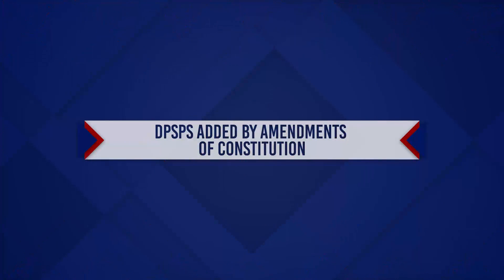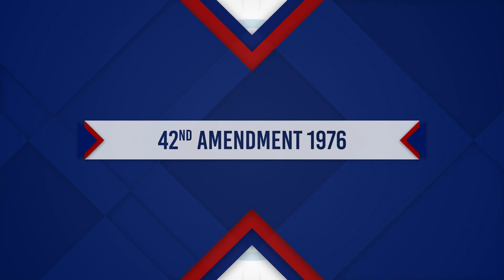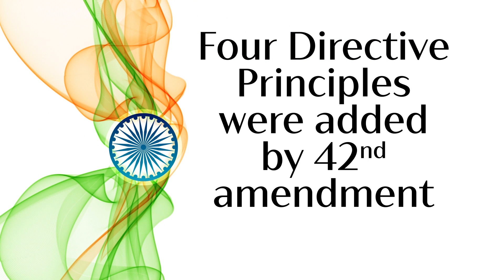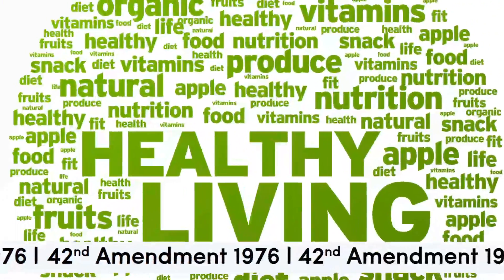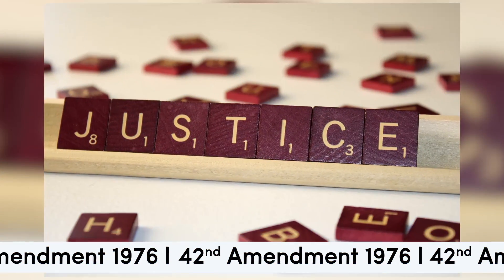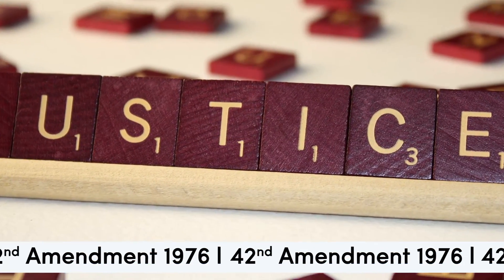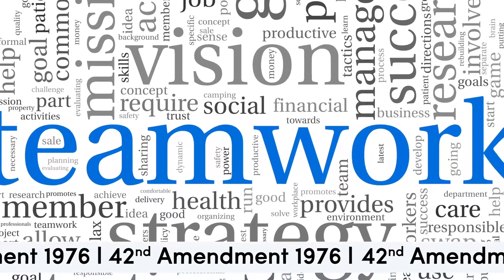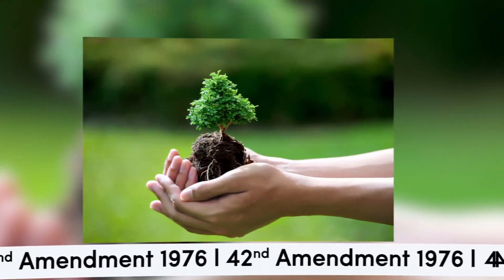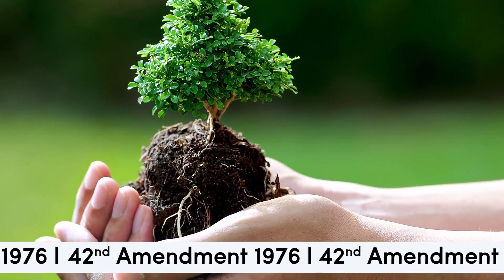Directive principles of the state policies added by amendments of the constitution. The 42nd Amendment added four directive principles: to secure opportunities for healthy development of children under Article 39; to promote equal justice and to provide free legal aid to the poor under Article 39A; to take steps to secure the participation of workers in the management of industries under Article 43A; and to protect and improve the environment and to safeguard the forest and wildlife under Article 48A.